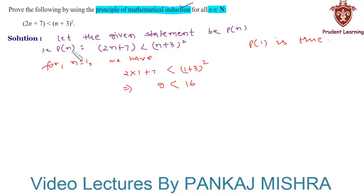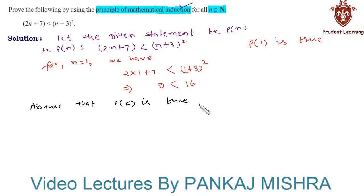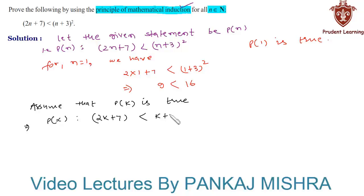In our second step, that is our assumption step, we will assume that P(k) is true for some positive integer k. That is P(k) such that 2 into k plus 7 is less than (k plus 3) whole square. Let us call this relation as 1.